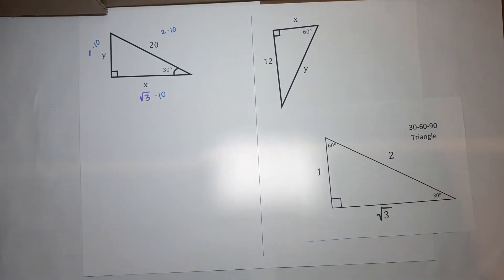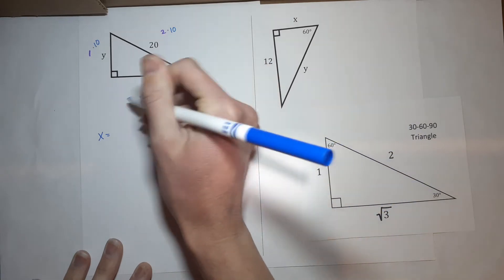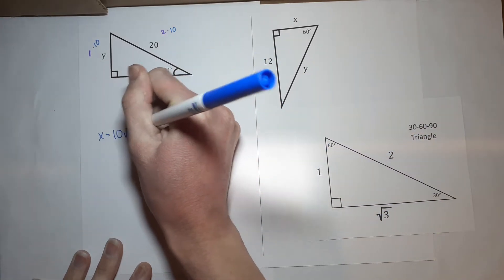Oh, my gosh. Not too bad, right? So, that means X equals 10 times the square root of 3, which I can just write as 10 times the square root of 3.